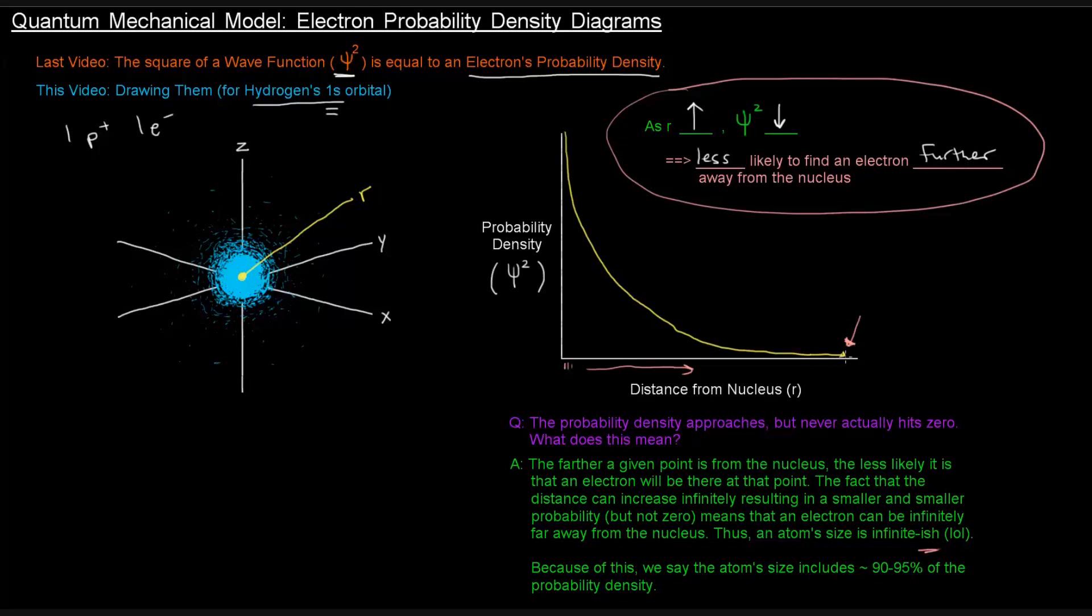Anyway, the point is that the atom size can't really entirely be defined if this probability density doesn't actually hit zero. There's no actual explicit limit. So because of this, you can't define the atom size if you include the entire probability density, because you can't include the entire probability density. So because of this, scientists kind of say that the atom size includes around 90 to 95%. Some might pick a certain value, some might say 85 or 90, some might say 95. But the point is that the atom size is sort of taken to be around 90 or 95% of the probability density, because we can't include all 100%.